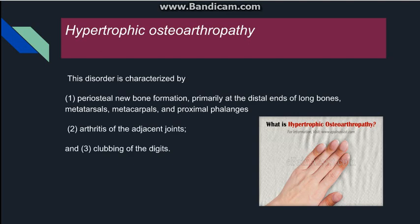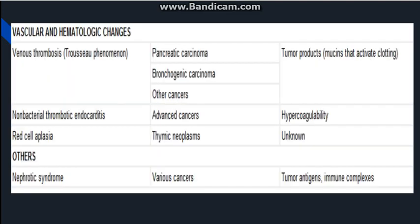The osseous change related to paraneoplastic syndrome is hypertrophic osteoarthropathy. In this picture, the patient presents with clubbing of the digits. There is periosteal new bone formation, especially in the hands, including the metacarpals, metatarsals, and proximal phalanges. Arthritis can also be associated. This is commonly seen in association with various neoplasms.